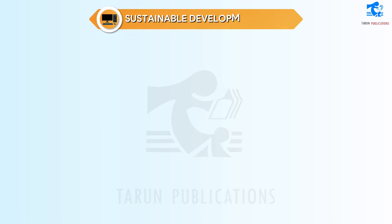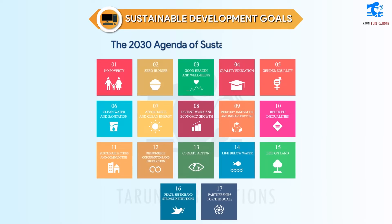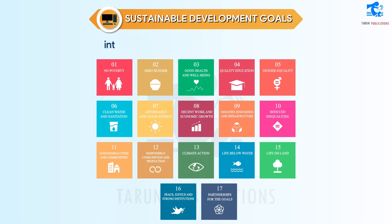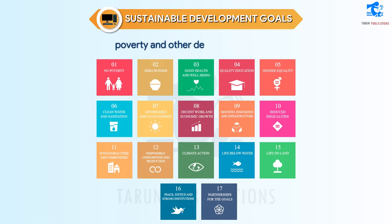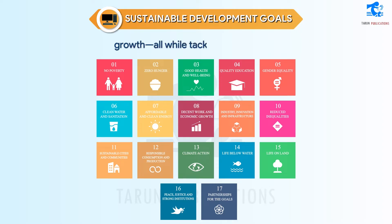The 2030 Agenda of Sustainable Development, adopted by all United Nations member states in 2015, provides a shared blueprint for peace and prosperity for people and the planet, now and into the future. All 17 Sustainable Development Goals are an urgent call for action by all countries, developed and developing, in a global partnership. They recognize that ending poverty and other deprivations must go hand-in-hand with strategies that improve health and education, reduce inequality, and spur economic growth, all while tackling climate change and working to preserve our oceans and forests.